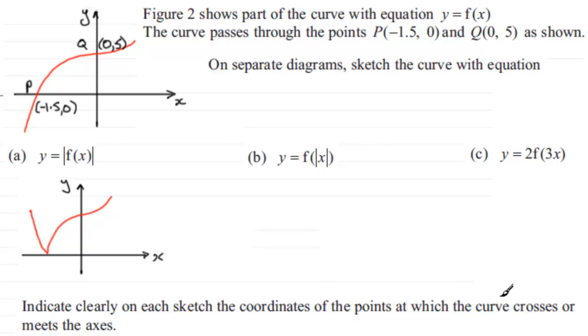We've got to indicate clearly the coordinates of the points at which the curve crosses or meets the axis. Well this point here at Q still is at Q, that's the point with coordinates (0, 5), and this point P here still remains exactly the same. So that's the point P with coordinates (-1.5, 0).